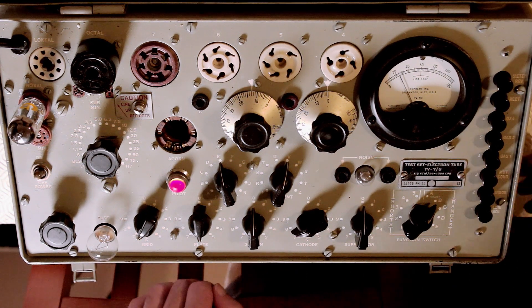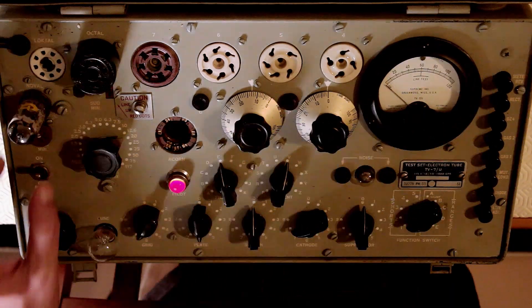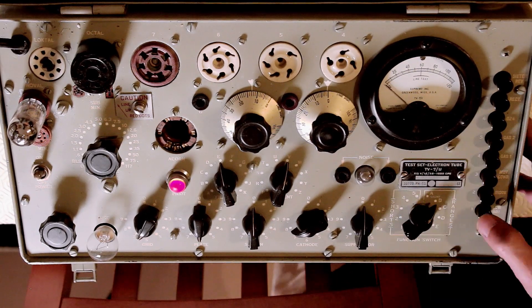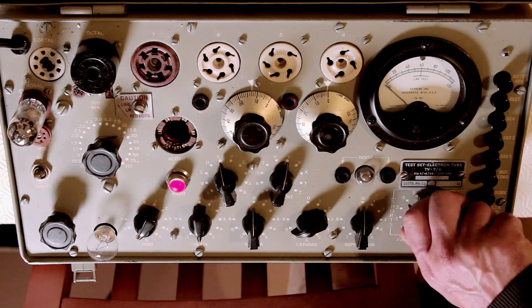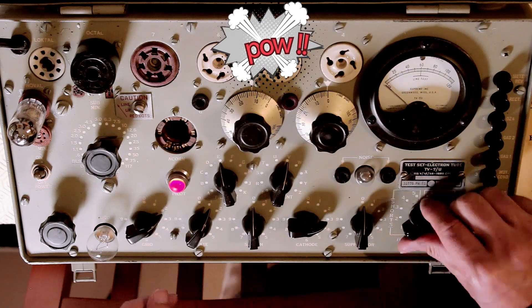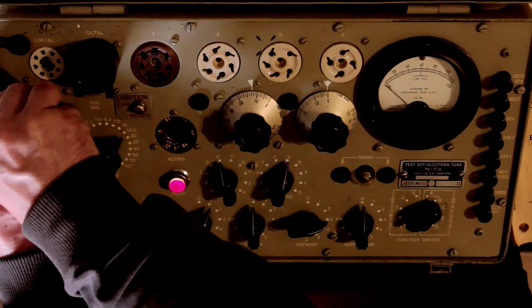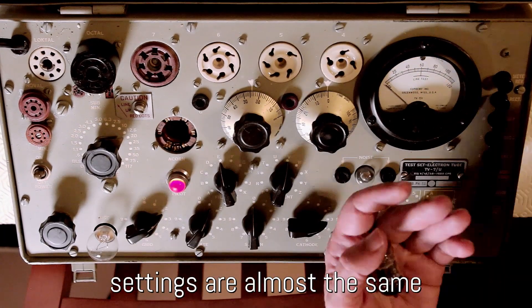Let's try another tube, a Tungsram ECC83. That's the European denomination, or 12AX7 for the US. This tube tests very strong and balanced. Both sides test similar values.